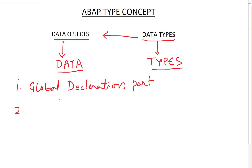Once I make all those declarations, then in the procedural part I'll write the actual logic. For example, if I want to process data from a database table — let's say the standard SAP table MARA, which stores material master data — I have to write a SELECT query to fetch this data from that table and store it in the memory locations or data objects I've defined in the global declaration part. Then I can write other ABAP statements to work with that data.